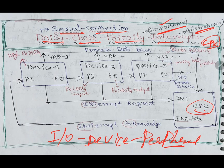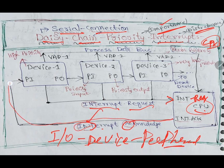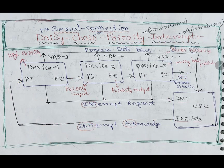Input/output devices like keyboard, mouse, joystick, pen drive, CD, DVD — all devices will disturb the CPU. They will send an INT — interrupt request — to the CPU. The CPU will then send INT ACK, which is interrupt acknowledgement, to device one, device two, device three. These devices are connected serially, chain link-wise, one to the next. Device one has the highest priority, device two has a little lower priority, and device three has very low priority.